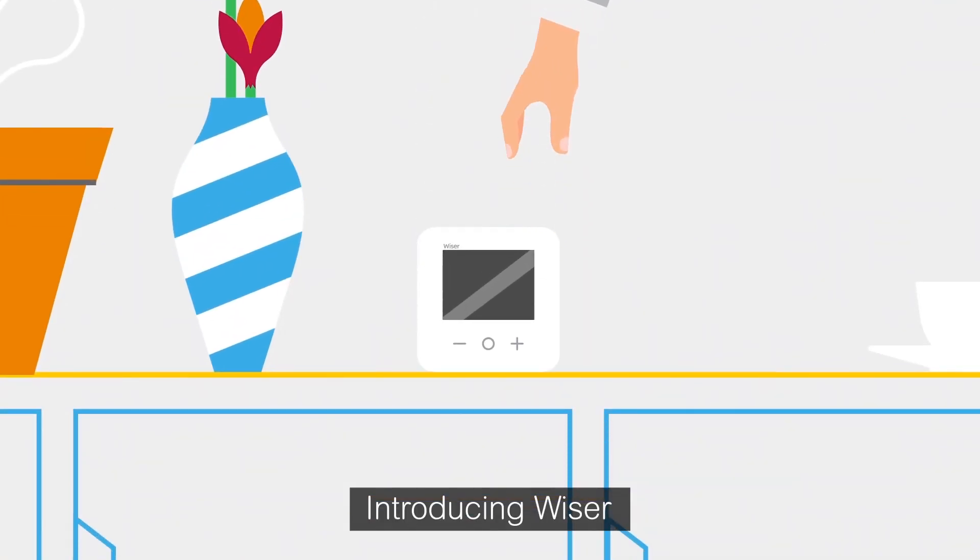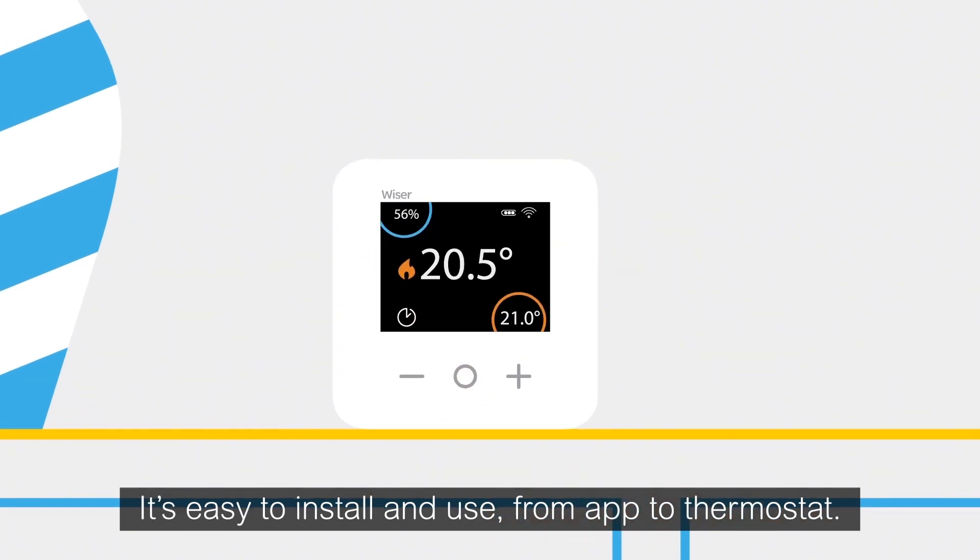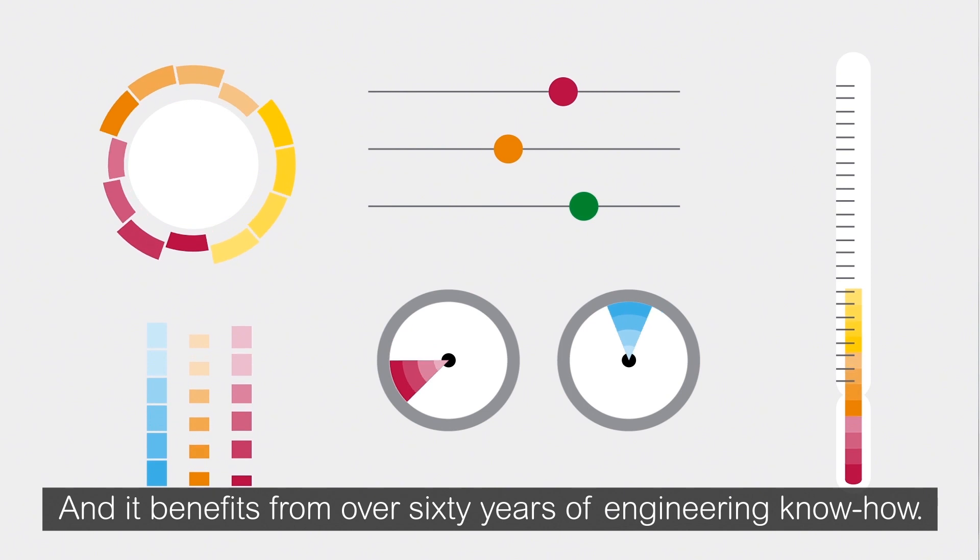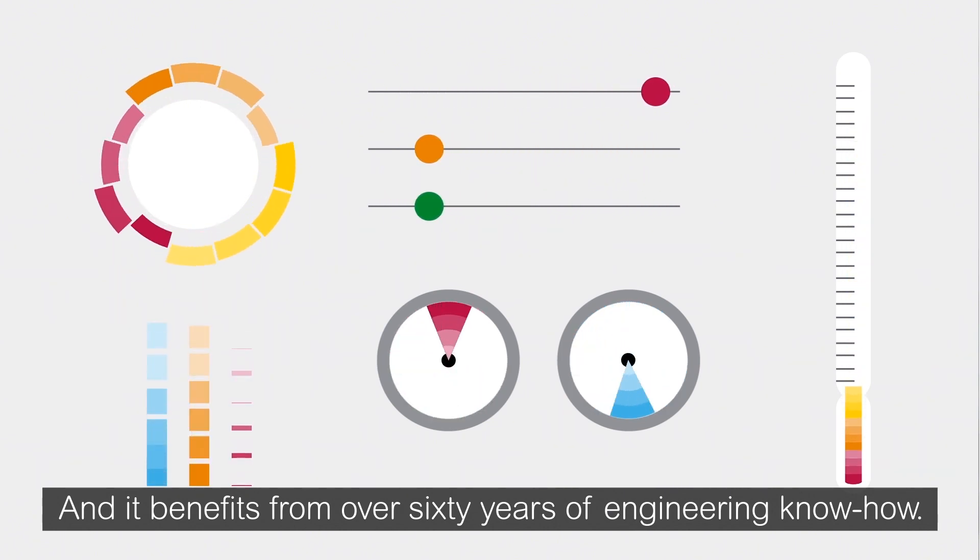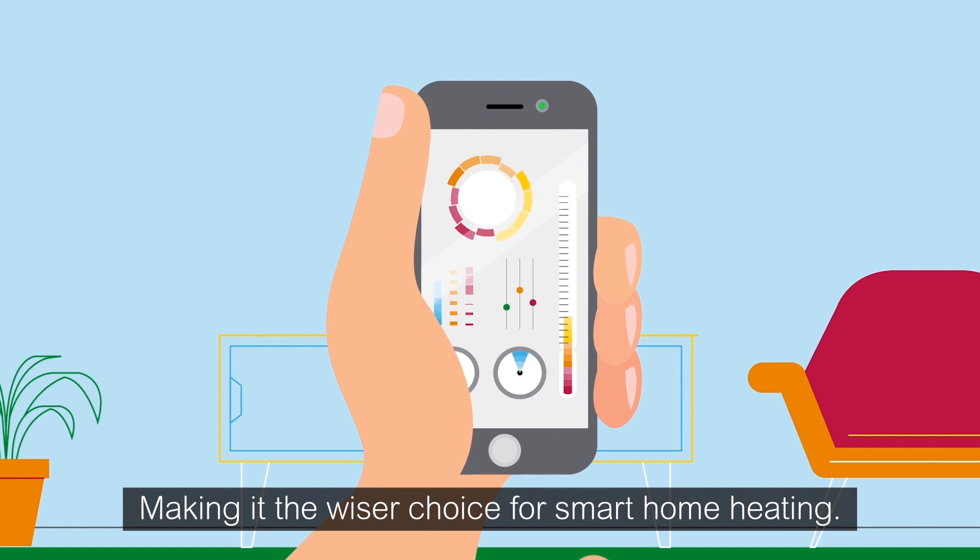Introducing Wiser, the beautifully simple heating system from Drayton. It's easy to install and use, from app to thermostat, and benefits from over 60 years of engineering know-how, making it the wiser choice for smart home heating.